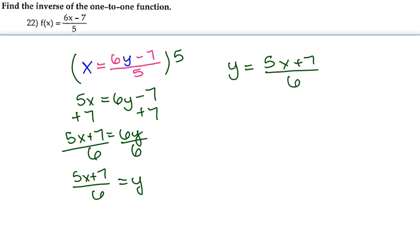Then we're going to switch the y back to the notation that was given to us. Because it is the inverse, we're going to write the negative 1 on top of the f and the x, and then our actual function itself. So we have f inverse of x equals 5x plus 7 over 6.